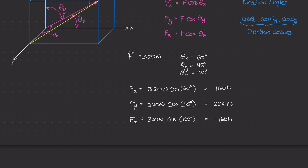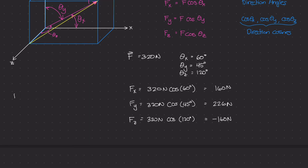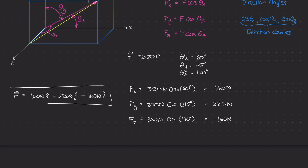That makes sense — the x and y components are positive, so in this diagram the x component goes in this direction and the y component goes in this direction. But the z component is not along the positive z-axis; it's actually going the other way into the negative z-axis. For completion, force vector f of 320 newtons has a component of 160 newtons in the i direction, plus 226 newtons in the j direction, minus 160 newtons in the k direction. And there is our answer.